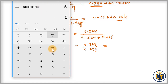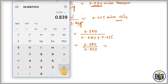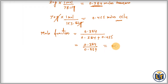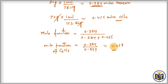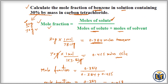Dividing 0.384 by 0.839, the value we get is 0.458. So the mole fraction of benzene (C₆H₆) is 0.458. In case you have to calculate the mole fraction of carbon tetrachloride, which is the solvent, you will put the solvent moles in the numerator and the rest of the formula remains the same.